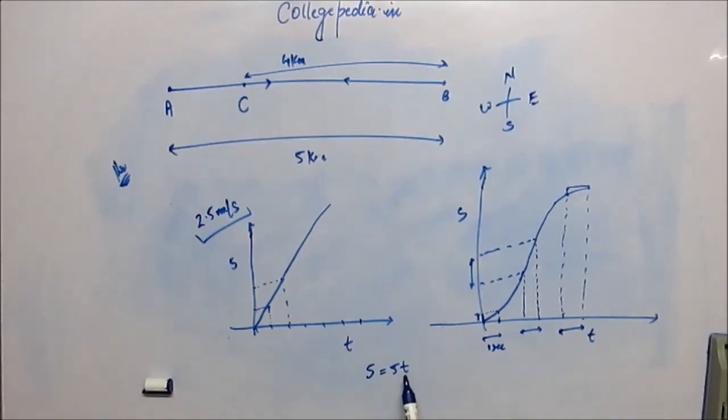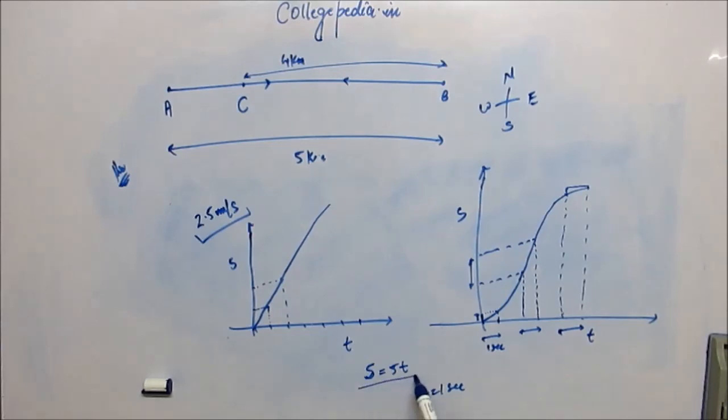Now for every time, for every value of time, you have a value of s, you have a value of distance. For example, what was the distance travelled when t was 0? If you put t is 0, the distance travelled was 0. What was the distance travelled when t was 1 second? If you put t is equal to 1 second, then the distance would come out to be 5. Because you have a mathematical equation.